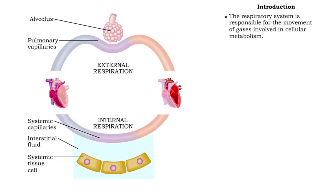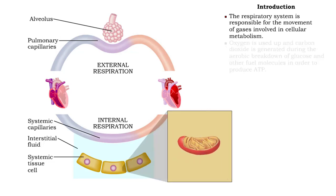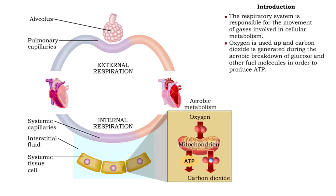The respiratory system is responsible for the movement of gases involved in cellular metabolism. Oxygen is used up, and carbon dioxide is generated during the aerobic breakdown of glucose and other fuel molecules in order to produce ATP.